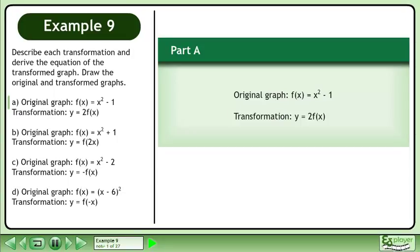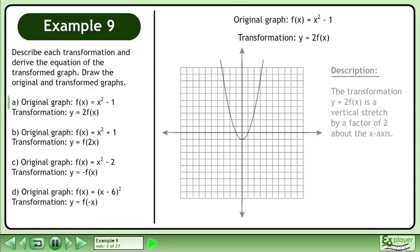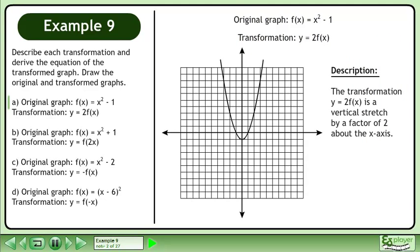In part a, the graph of f of x equals x squared minus 1 is transformed by the equation y equals 2f of x. The transformation y equals 2f of x is a vertical stretch by a factor of 2 about the x-axis.